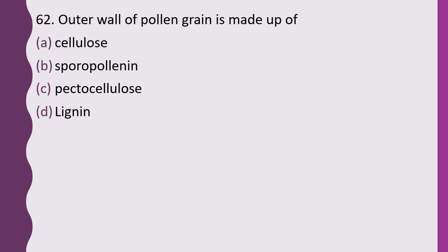Question 62. The outer wall of the pollen grain is made up of: cellulose, sporopollenin, pectocellulose, or lignin. The outer wall, also called the exine, is made of sporopollenin. The correct answer is option B, sporopollenin.